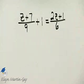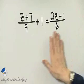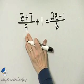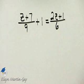Let's solve this equation for z. Let's go ahead and multiply through by the LCD so that once I simplify, I no longer have fractions. What's the least common denominator with denominators of 9 and 6? That is 18.